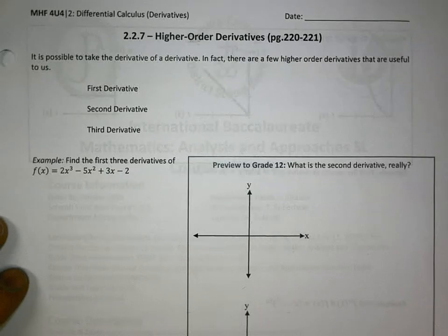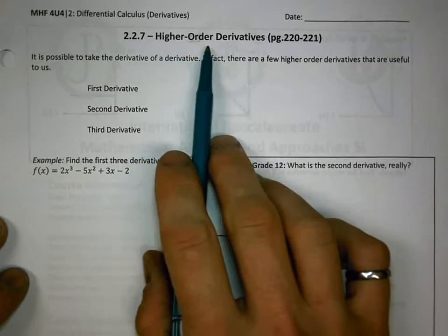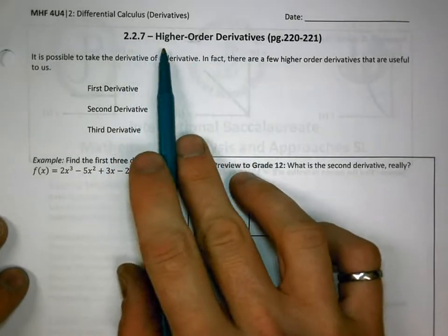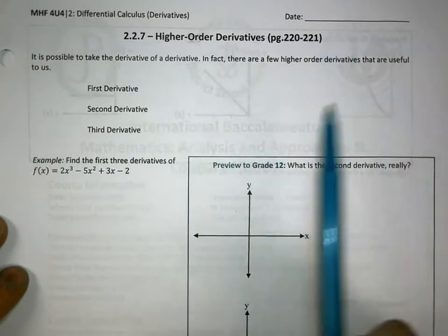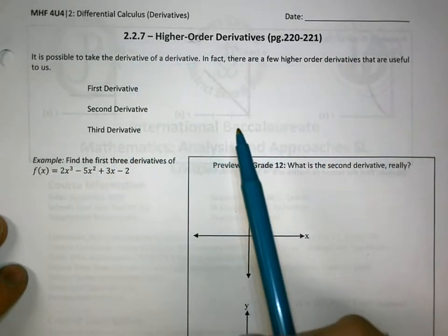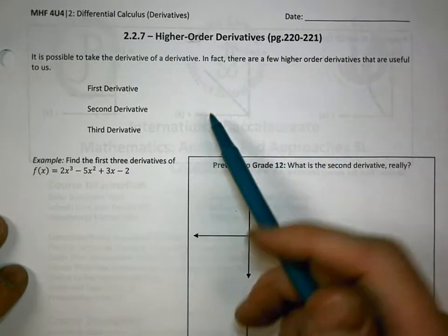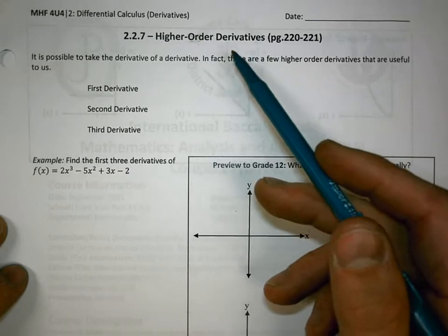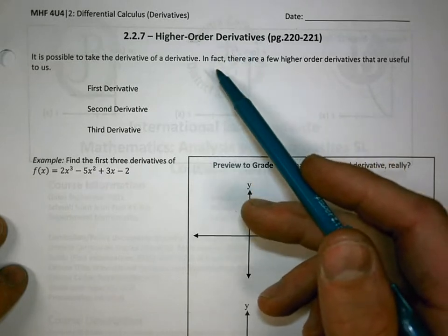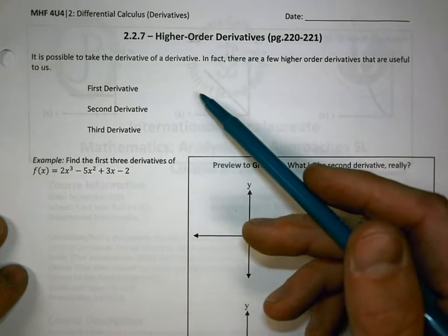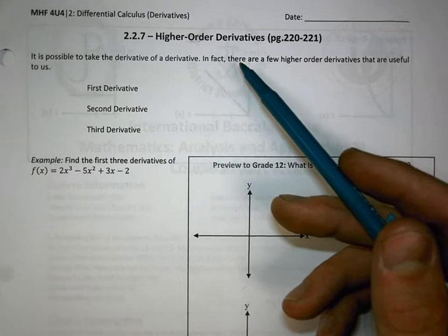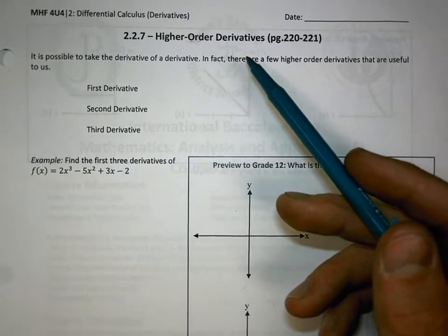Hello, Mr. Claudio here. Today we are going to be learning about higher order derivatives, which sounds scary, but is actually a pretty easy concept. A higher order derivative just means to take the derivative of the derivative, or the derivative of that derivative.